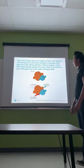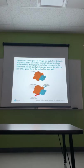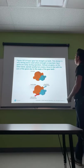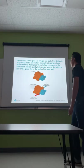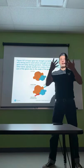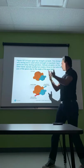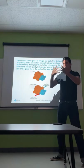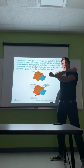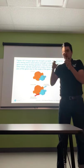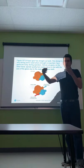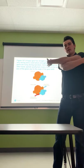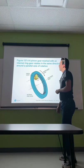A spur gear has straight-cut teeth — this design is very strong and is used where strength is important, but spur gears are noisy during operation. Helical-cut gears operate quietly but create a force in line with the axis of the gears due to the angle of the teeth — this is called axial thrust. As those gears mesh together, they want to push away from each other. We need thrust bearings on each side to allow those gears to mesh and move without pushing away, to hold them in place.